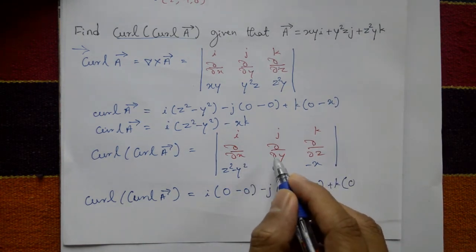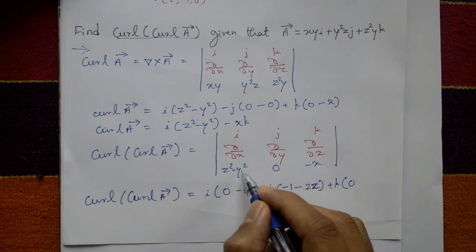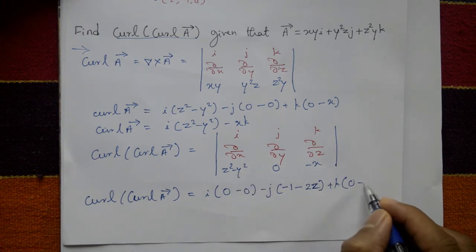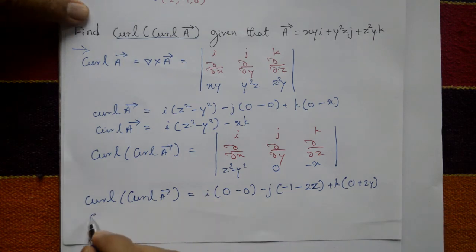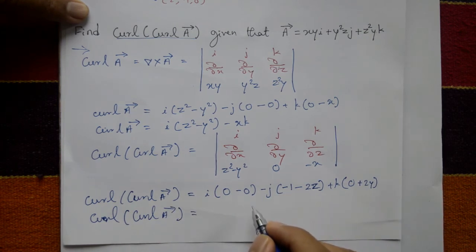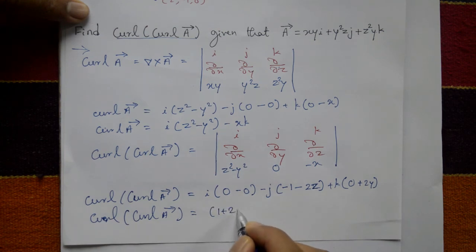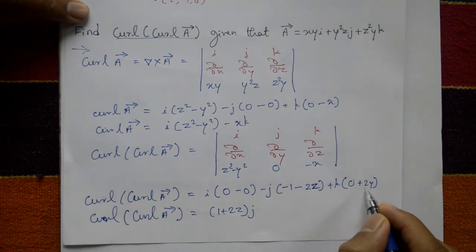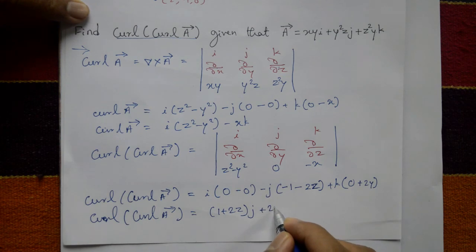Plus k into, now zero, and differentiate with respect to y partially means minus and minus plus 2y. And curl of curl A is equal to, i is zero, and j take minus outside means 1 plus 2z j, and plus 2y k. This is the required answer.